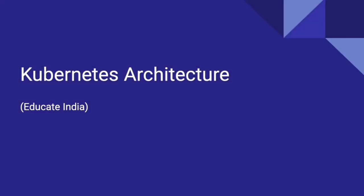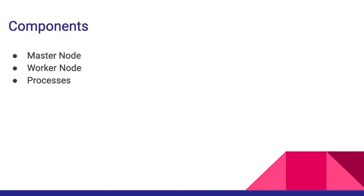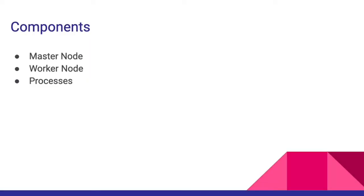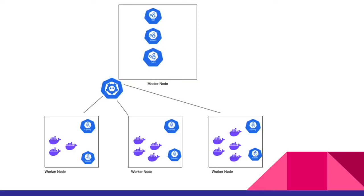Hey guys, you're watching Educate India and today we'll discuss about Kubernetes architecture. We'll discuss master node, worker node, and different processes running within these nodes. First we have to understand what is a node in Kubernetes — basically a node is any kind of physical or virtual machine. We have two different types of nodes in Kubernetes: master node and worker node.